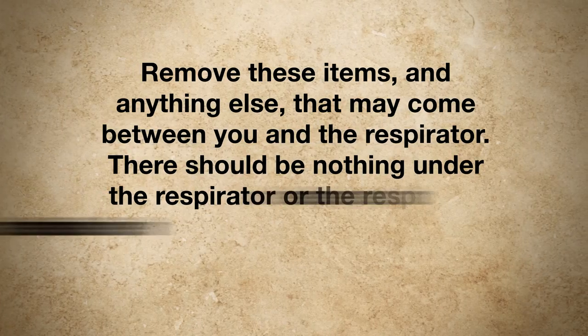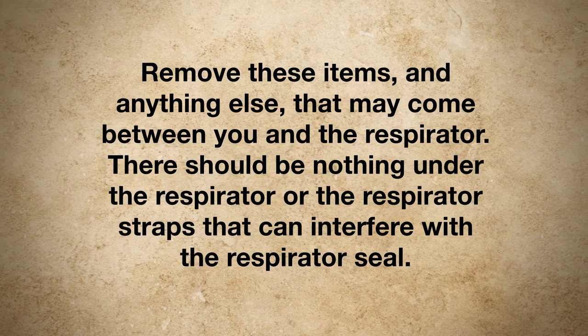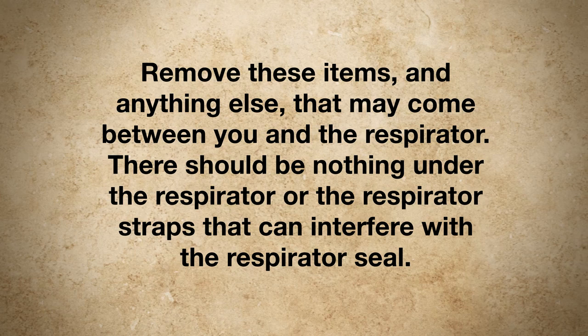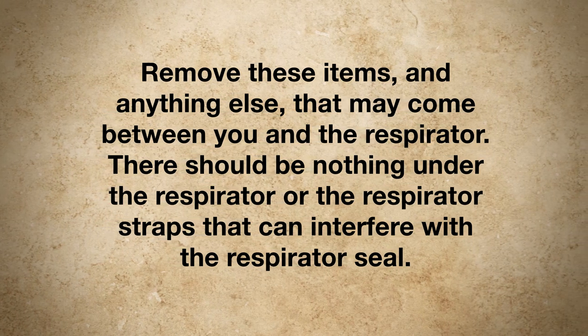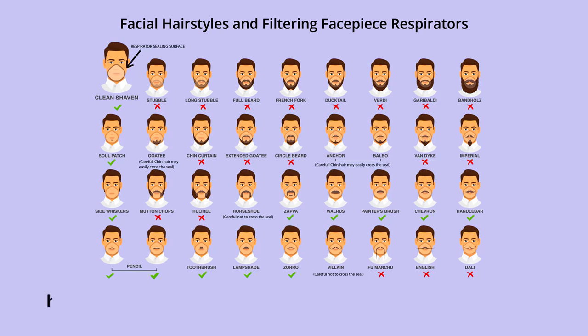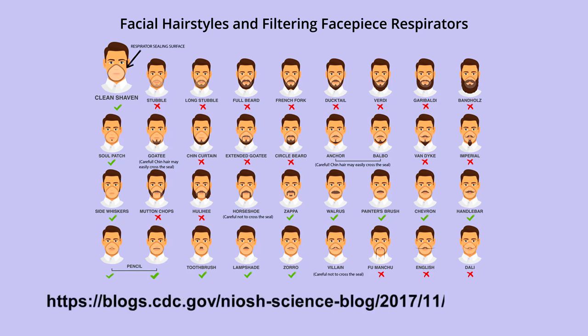As a responder, you can wear glasses, a hat, a body cam that mounts on your hat or around your head, and a radio that may use an earbud. Remove these items and anything else that may come between you and the respirator. There should be nothing under the respirator or the respirator straps that can interfere with the respirator seal. If you have facial hair that comes between the sealing surface of the face piece and your face, or that interferes with the valve function, you shouldn't wear the tight-fitting respirators described in this video.